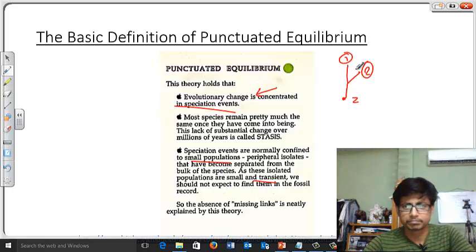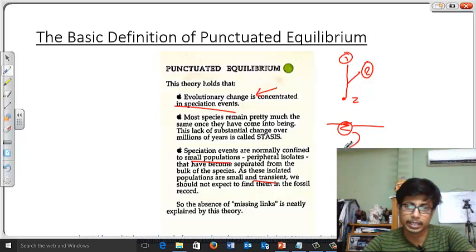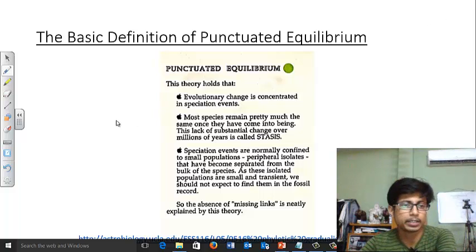But the thing is, in this case when we find a fossil, we can say that in punctuated equilibrium theory it will remain as it is for a duration of time until and unless there is a change in the environment which forces that organism to change itself in morphology as well as physiology to produce a different species. So that is the idea behind punctuated equilibrium.